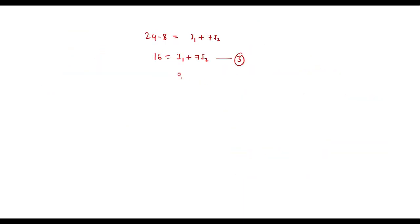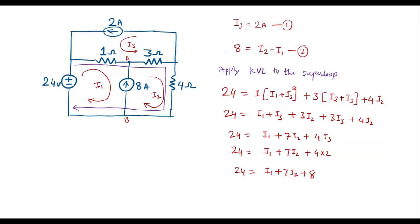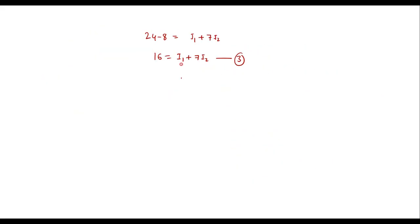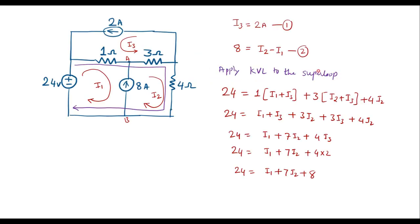So now we need to solve Equation 2 and Equation 3 to find the values of I1 and I2. Solving equations 2 and 3: Equation 2 can be rewritten as 8 is equal to minus I1 plus I2.